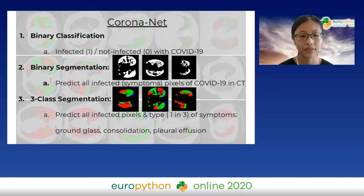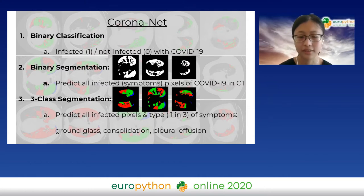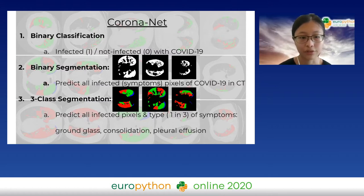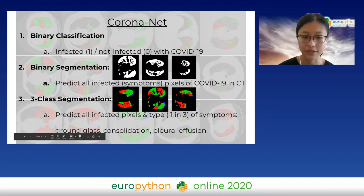CoronaNet is made up of three tasks. Firstly, binary classification — zero or one, infected or not infected with COVID-19. Secondly, binary segmentation: given a CT image, we identify all the pixels which are infected with a symptom. Symptoms include ground glass, consolidation, and fluid effusion. With binary segmentation, we do not differentiate between them. Whereas with three-class segmentation, we do differentiate between them, as you can see from the colors. Three-class segmentation is obviously the most difficult, which accounts for the slightly lower accuracy.